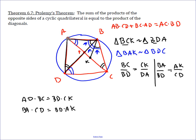If we add these together, we get AD times BC plus BA times CD. And that equals BD times CK plus BD times AK.